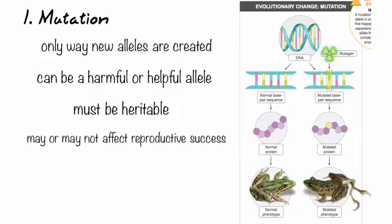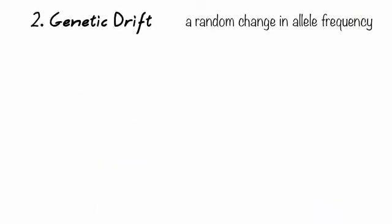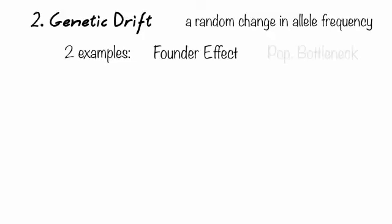A mutation may or may not help reproductive success. Blue eyes are a mutation — you guys are mutants — but it does not affect reproductive success. Sometimes there are mutations and alleles just floating out there doing kind of nothing. Next: genetic drift, where evolution occurs because of some crazy random chance — we call it like the lottery. There are two examples: the founder effect and population bottleneck.